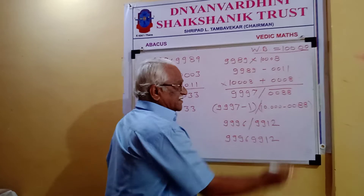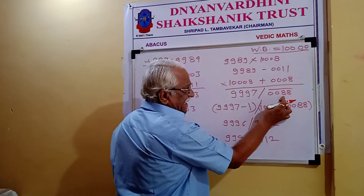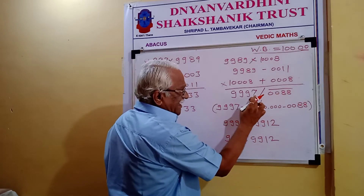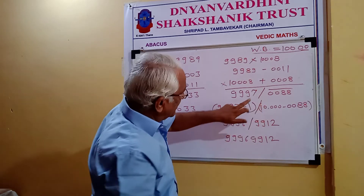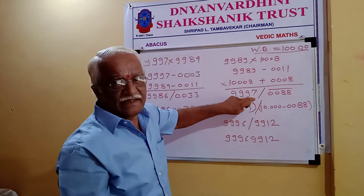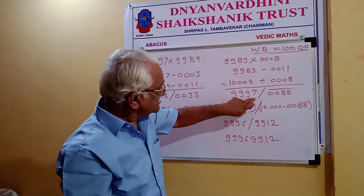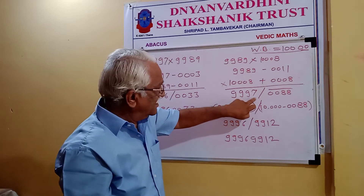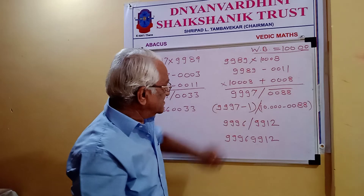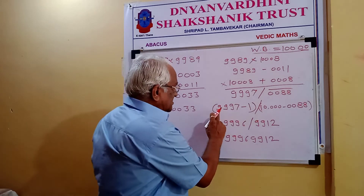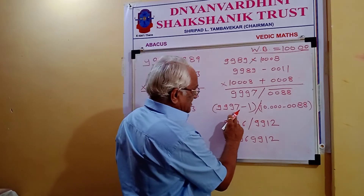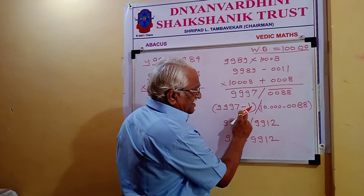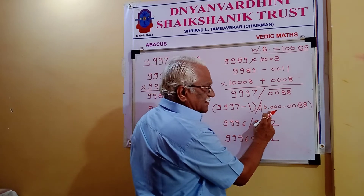Now here you see — you need to handle 10s, 100s, 1000s, and 10,000s. Each digit here has a value of 10,000. So we are subtracting one from the left part — that is 9,997 minus 1.